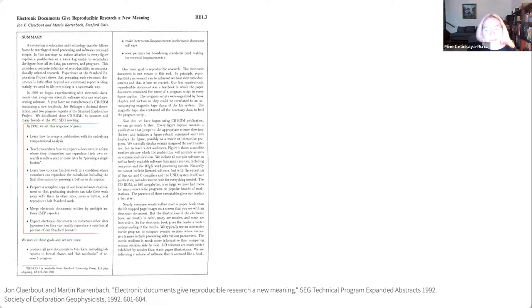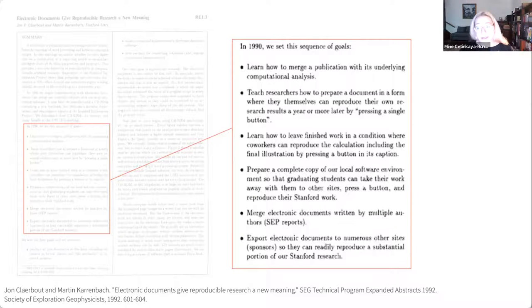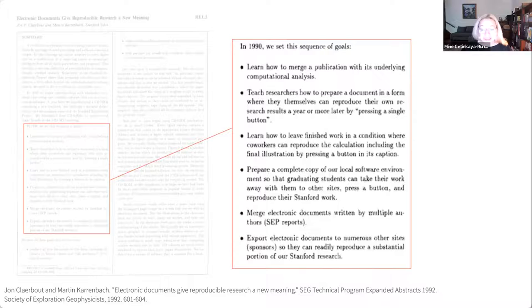I'm going to show you this paper from 1992, titled 'Electronic Documents Give Reproducible Research a New Meaning.' One excerpt says that in 1990 they set a sequence of goals: learn how to merge a publication with its underlying computational analysis; teach researchers how to prepare a document so they themselves can reproduce their own research results a year or more later by pressing a single button; learn how to leave finished work in a condition where coworkers can reproduce the calculation by pressing a button.